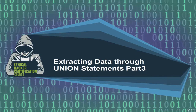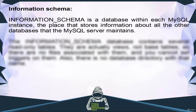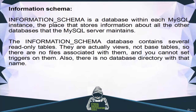Welcome. In this video we will see extracting data through Union Statements part 3 — MySQL table and column names. Information schema is a database within each MySQL instance — the place that stores information about all the other databases that the MySQL server maintains. The information schema database contains several read-only tables; they are actually views, not base tables, so there are no files associated with them, and you cannot set triggers on them. There is also no database directory with that name.